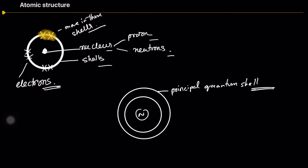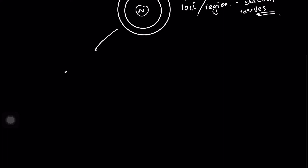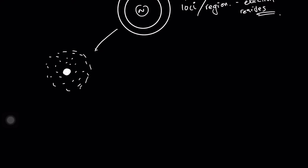These principal quantum shells are basically a region — a locus or region where the electron resides. That means electrons are actually in this region of the atom. In reality, if you think about it, electrons look something like a cloud around the nucleus.